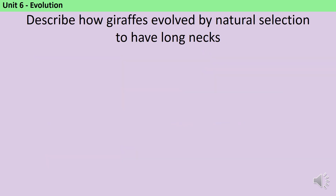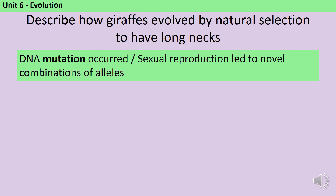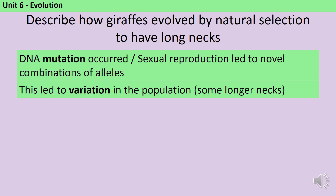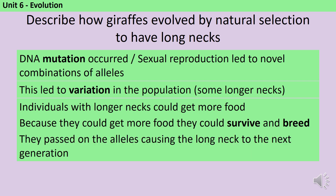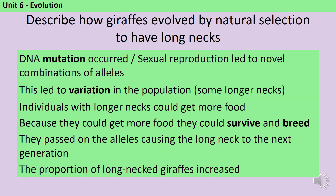Now let's see how to answer an exam question. 'Describe how giraffes evolved by natural selection to have long necks.' For natural selection to occur there needs to be variation, so we explain where it came from: DNA mutation occurred, or sexual reproduction led to novel combinations of alleles. This meant there was variation — specifically, some giraffes had longer necks than others. Then there was a selection pressure: giraffes were going hungry, so individuals with longer necks could reach more food — a selective advantage. Because they had more food, they survived and bred, passing on the long-neck alleles to the next generation, so the proportion of long-necked giraffes increased.